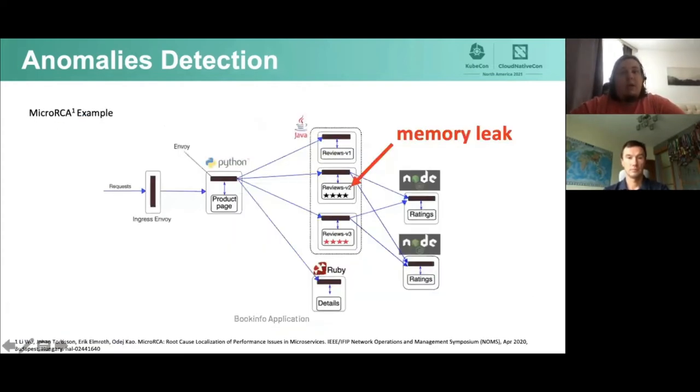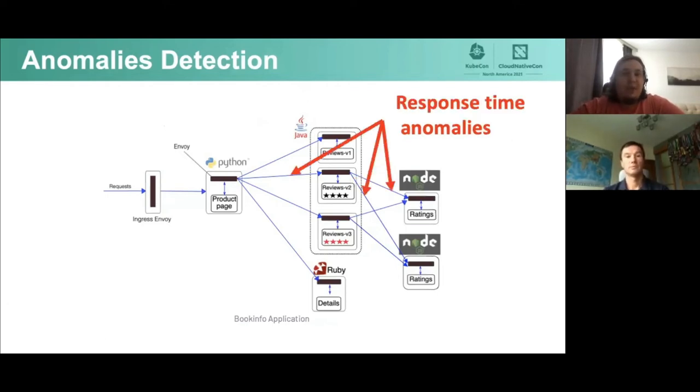Now we know how to automatically find anomalies in metrics. Let's see what we can do with this information. For KubeCon, we checked the MicroRCA algorithm on the example of our favorite BookInfo application. Let's see what came of it. Anomaly detector notices time deviations in requests, and a root cause detection method can start with this data.